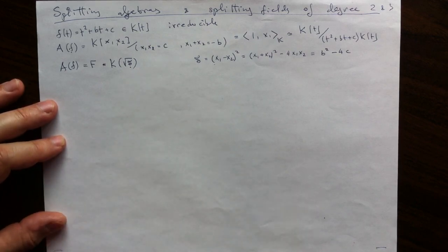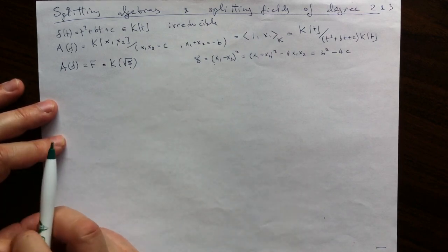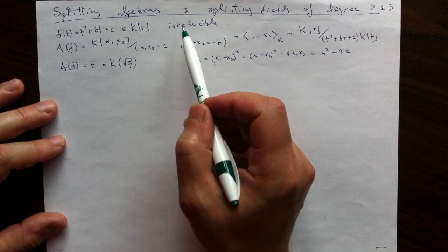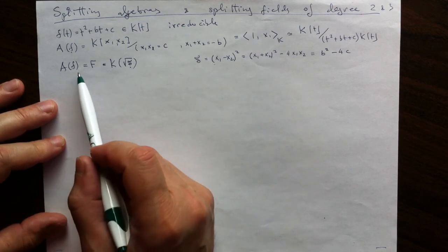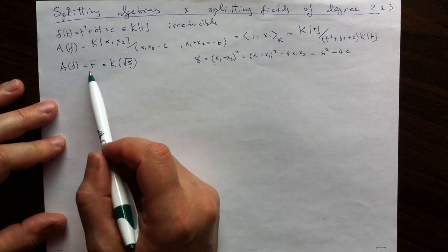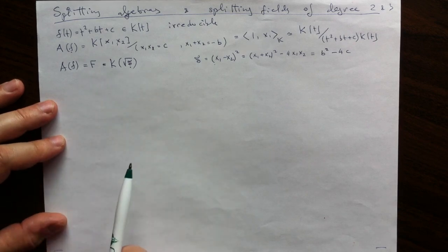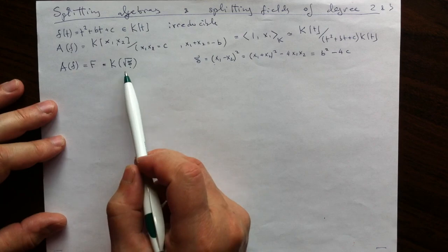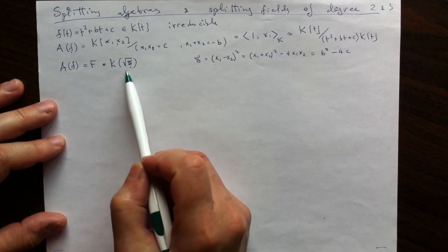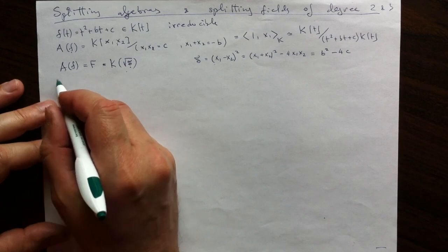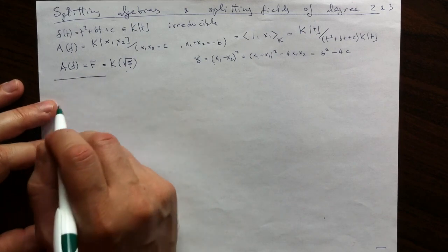As promised, the story of quadratics is really short. If we start with an irreducible polynomial, the splitting algebra is just a field — it is a splitting field — and it can be written as the result of attaching to the scalars the square root of the discriminant. Now let's look at the degree 3 case.